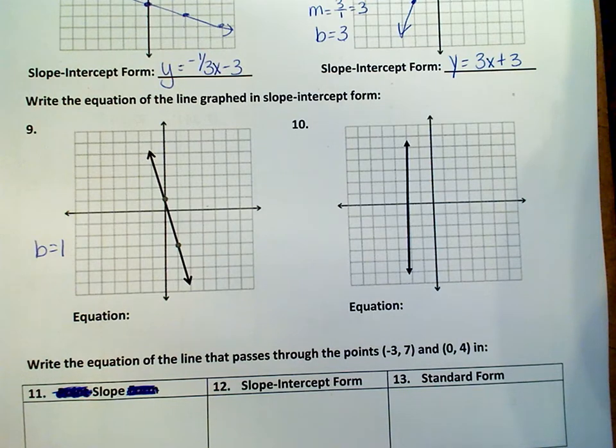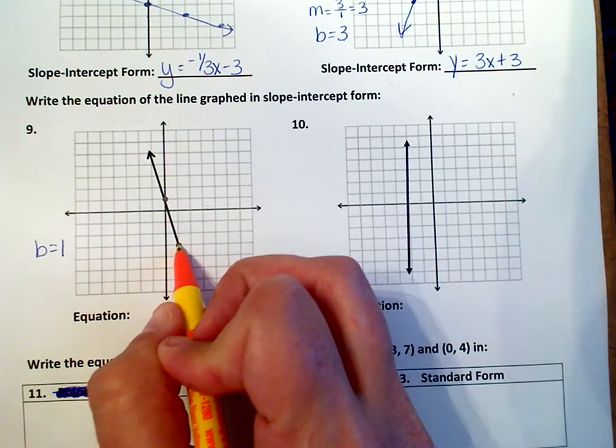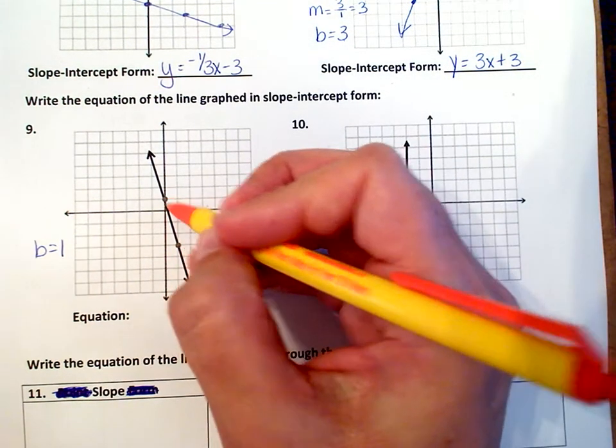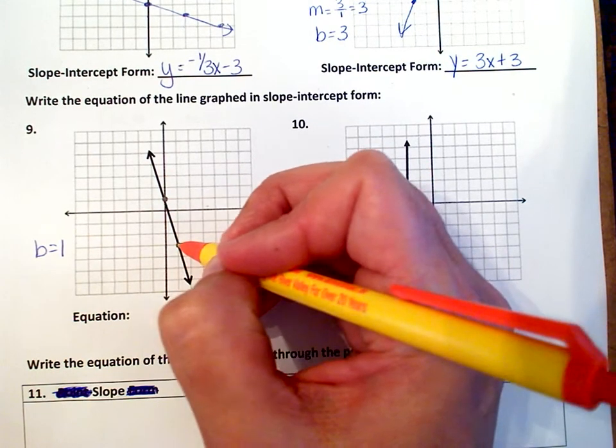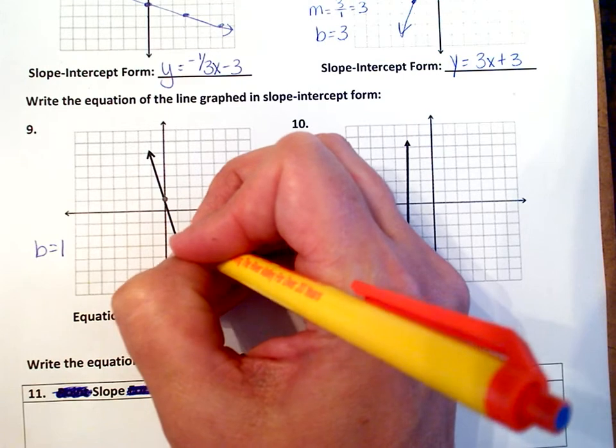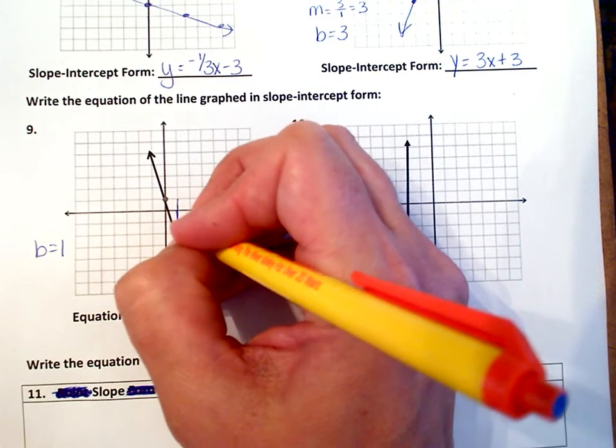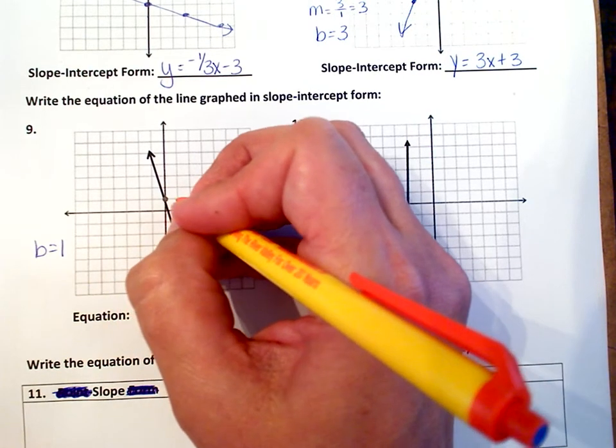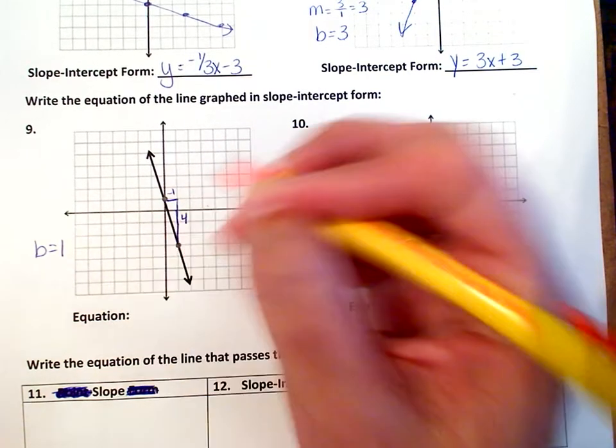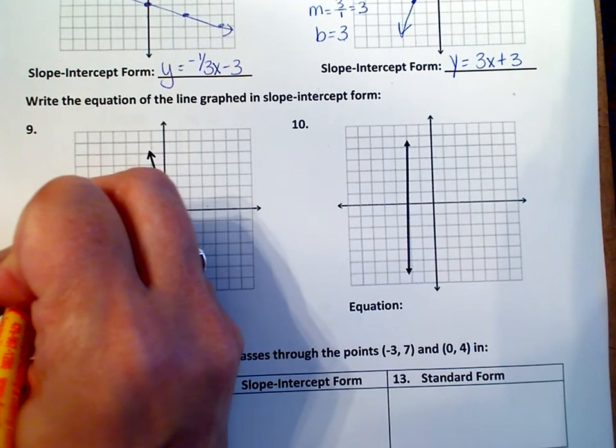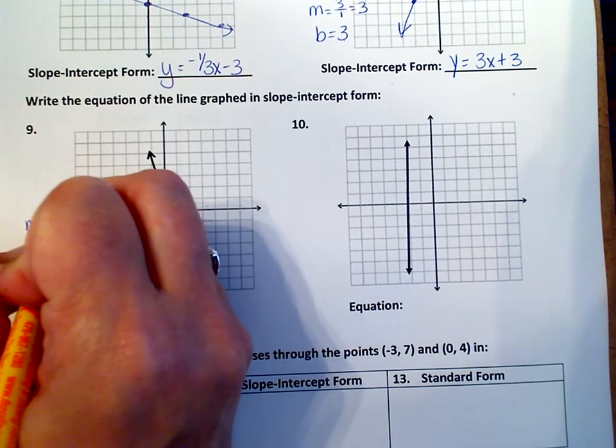Then find another point on the line. When I rise and run, I always start at the lower point, the point closest to the bottom, which is this point. So we rise 1, 2, 3, 4, and we go backwards 1. Because we went backwards, that's going to be negative 1, so our slope is 4 over negative 1.